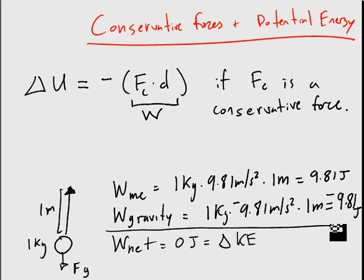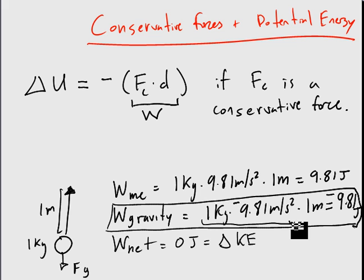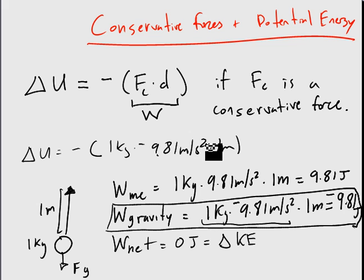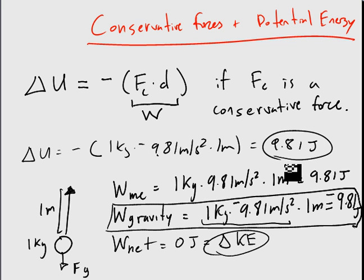So gravity is a conservative force. Let's think about what that means. If we use our formula here and we say, well, the force of gravity, which would be this, is indeed a conservative force. Just take my word for it. Then I should be able to use this formula to figure out the change in potential energy of this ball. So I could say that delta U is equal to the negative of whatever we got over here, which was 1 kilogram times negative 9.81 meters per second squared times 1 meter. And that would give us positive 9.81 joules. And what that would mean is that while the kinetic energy did not change, the potential energy did. And it gained 9.81 joules of potential energy.